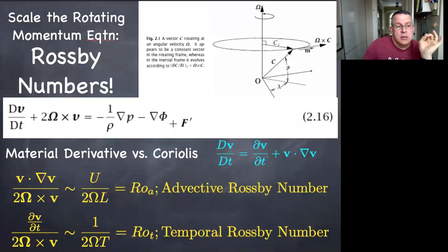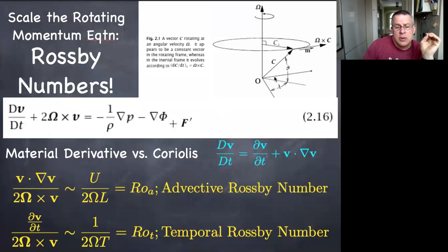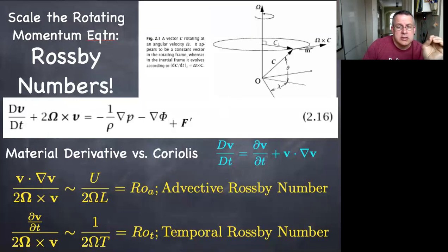That's it for this one. Rossby numbers are important. Whether or not you followed all the vector calculus details, the important thing is we can write the equations with just a small tweak to bring along the Coriolis force and centrifugal force, which explains the difference between the rotating-frame and inertial-frame equations of motion.